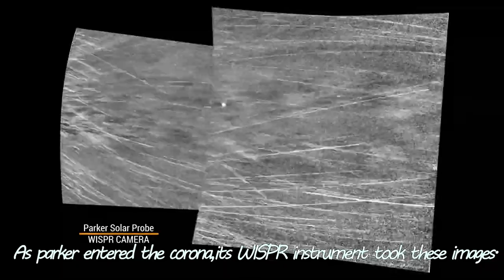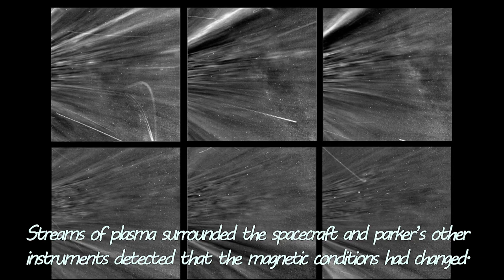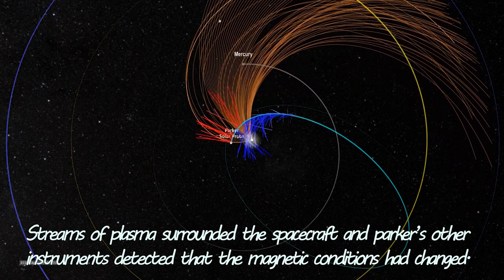As Parker entered the corona, its whisper instrument took these images. Streams of plasma surrounded the spacecraft and Parker's other instruments detected that the magnetic conditions had changed.